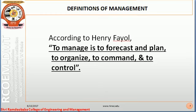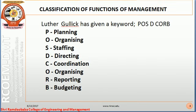According to Fayol, management includes forecasting and planning, organizing, commanding, and controlling the operations of the establishment. Luther Gullick gave us the keyword POSDECORB — P for planning, O for organizing, S for staffing, D for directing, C for coordination, O for organizing, R for reporting, and B for budgeting. So management, according to Gullick, is composed of all these activities.